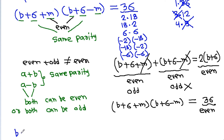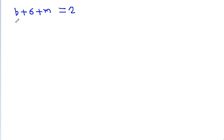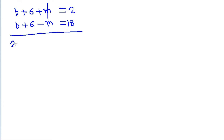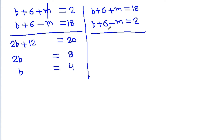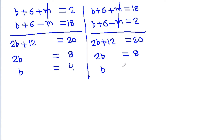Case 1: b+6+m=18 and b+6−m=2. Adding both equations, m cancels: 2b+12=20, so 2b=8, giving b=4. Case 2: b+6+m=2 and b+6−m=18. Adding again, m cancels: 2b+12=20, so 2b=8, giving b=4.